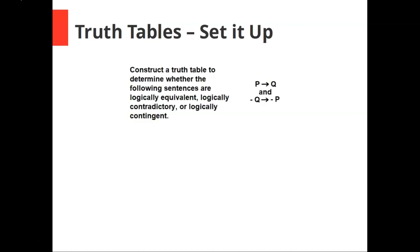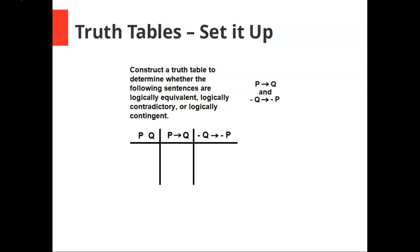Here's our first example. Construct a truth table to determine whether the following sentences are logically equivalent, logically contradictory, or logically contingent: if p then q, and if not q then not p. So we're going to set up our truth table with our two sentences and every combination of true and false for those two simple sentences.